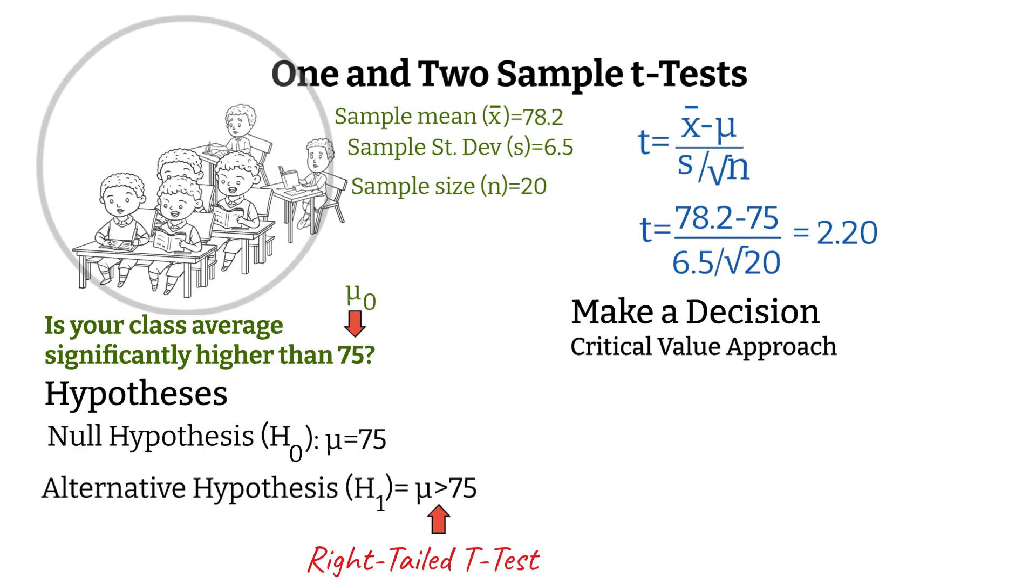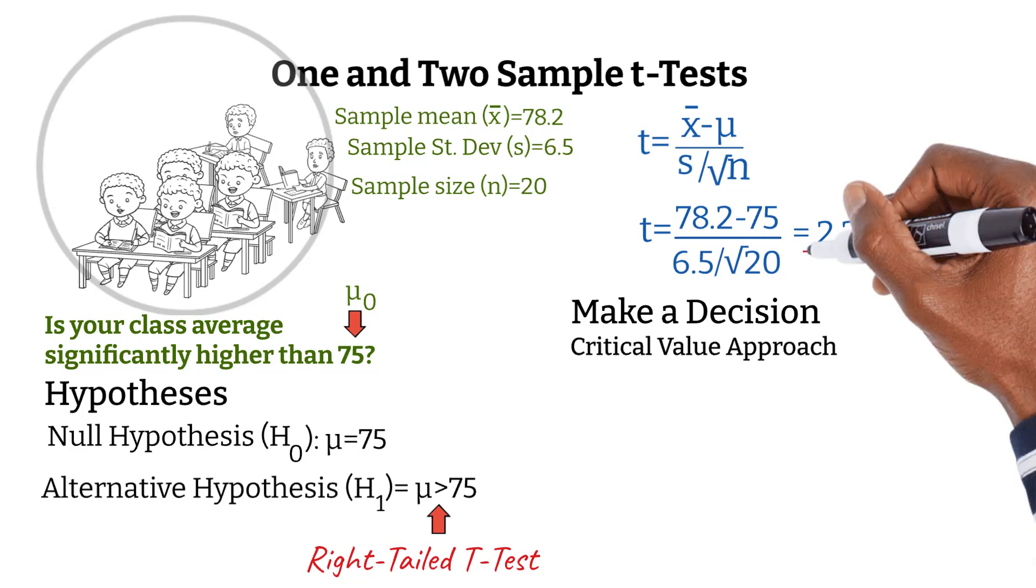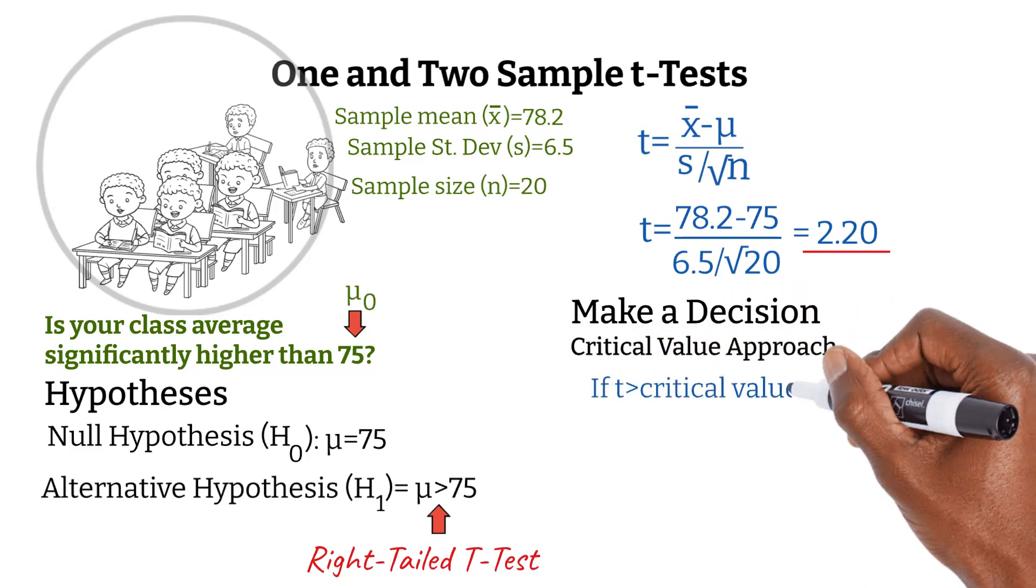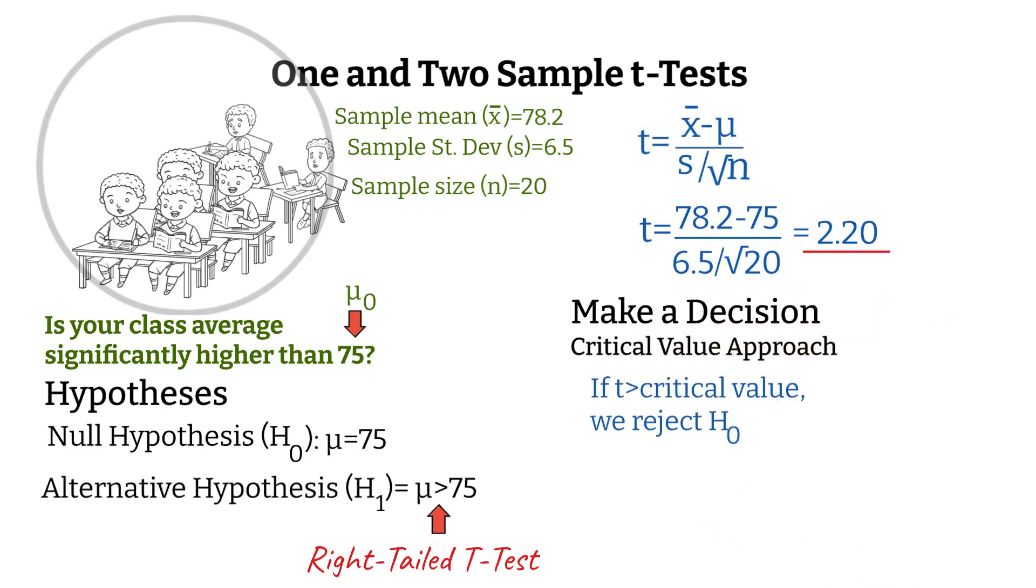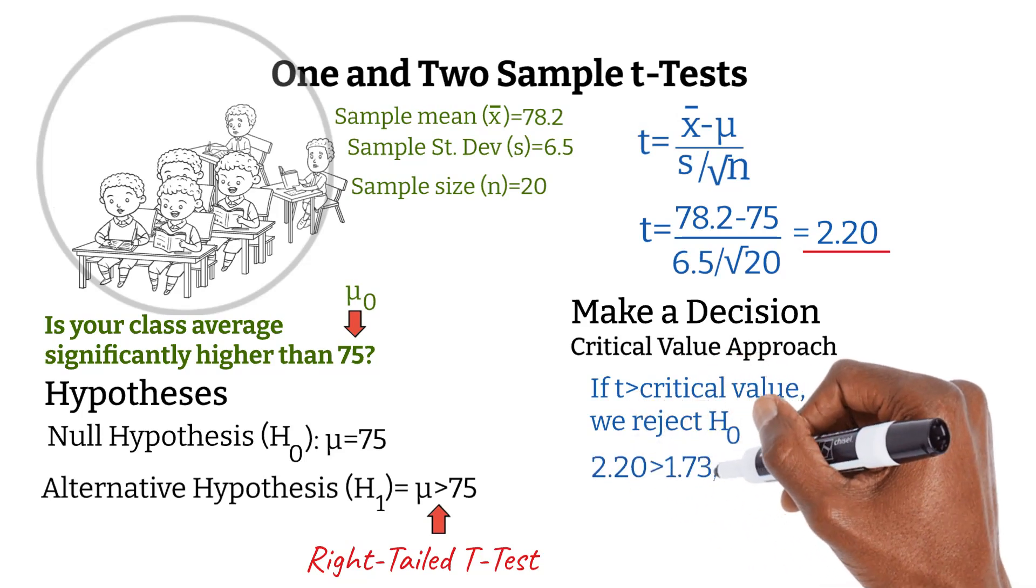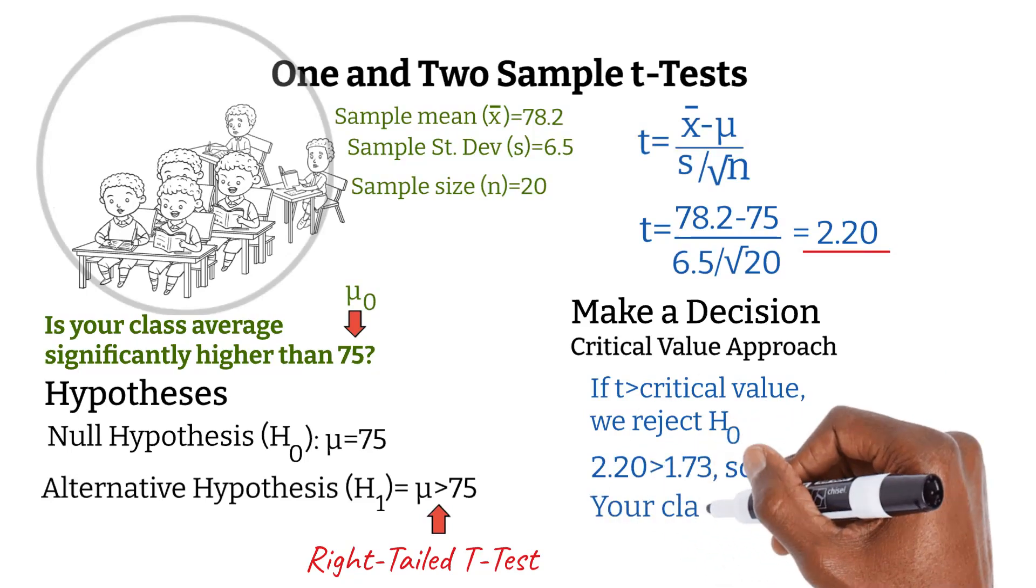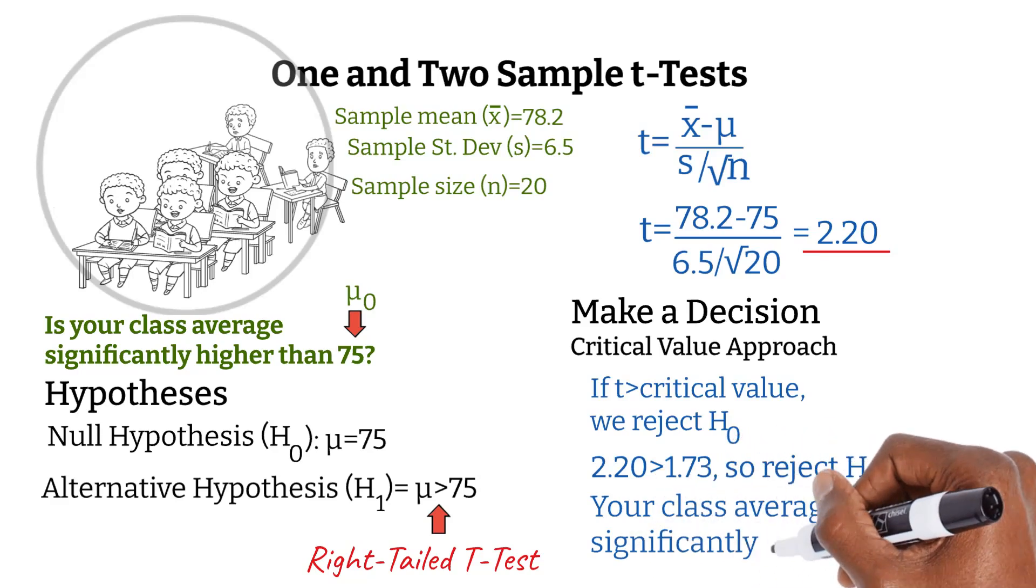Going back to our previous work, we learned that our t-value is 2.2. If the t-value is greater than the critical value, we reject the null hypothesis. Comparing our t-value of 2.2 to our critical value of 1.73, we see that our t-value is greater than our critical value. Since 2.2 is greater than 1.73, we reject the null hypothesis, which leads to the conclusion. Your class average is significantly higher than 75.